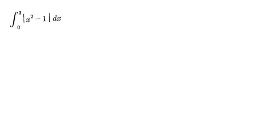Let's take a look at the second problem now. For the second problem, I have the definite integral from 0 to 3 of the absolute value of x squared minus 1. Just like the previous problem, whenever you're doing absolute value functions, you want to graph the absolute value first, and after that you can set up the integral.